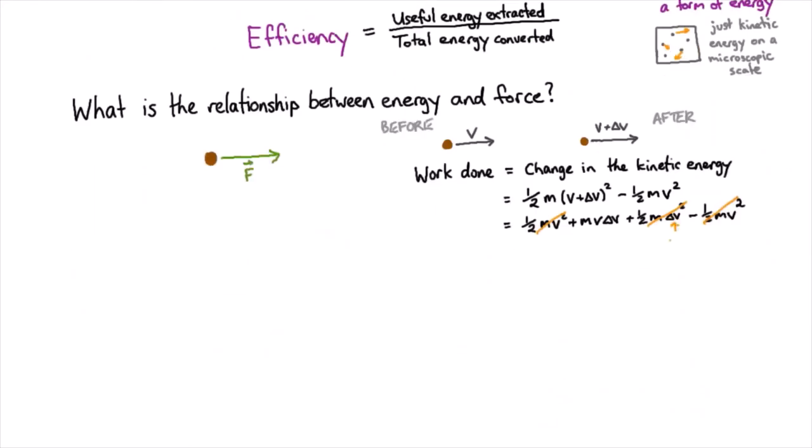And of course those two things cancel. And we can also ignore this, because as we make delta v smaller and smaller compared to v, then this term is going to be increasingly small compared to the other term. And so we can neglect it because we make delta v as small as we like until we're happy with that approximation.